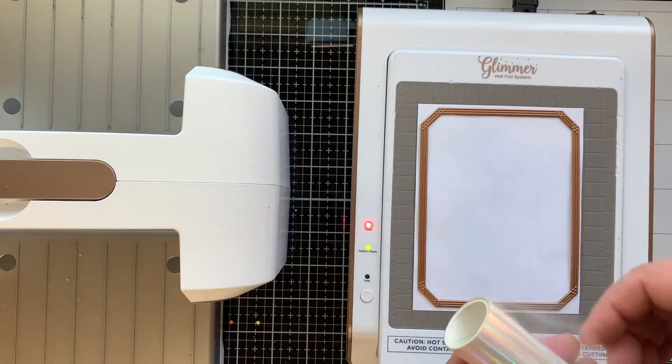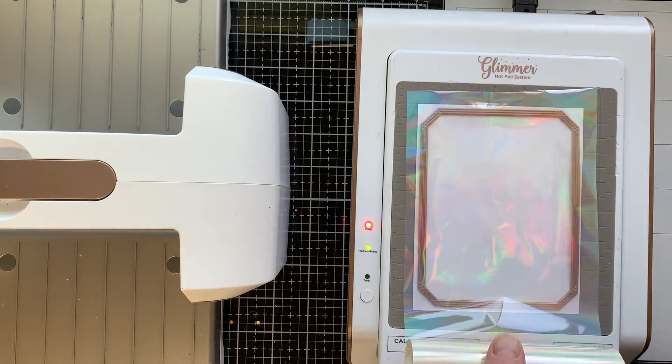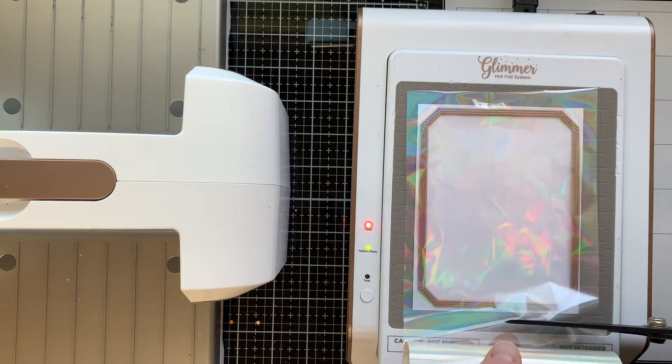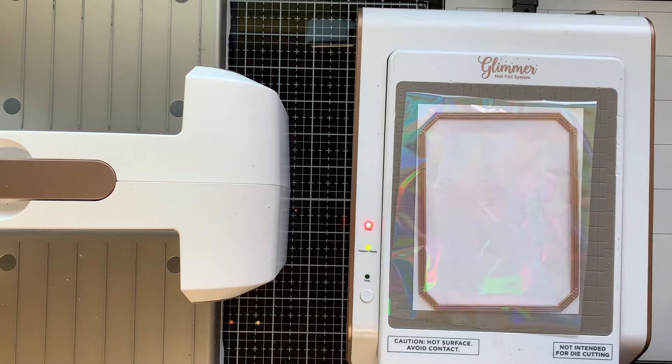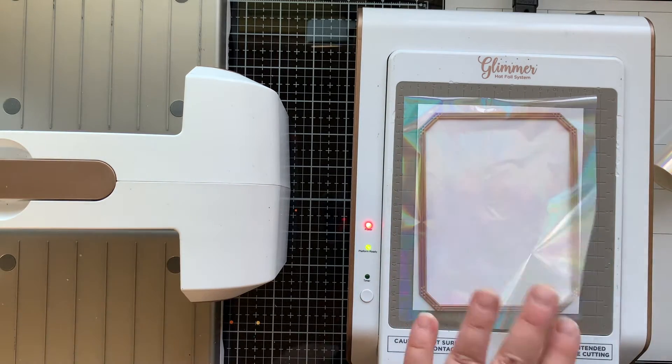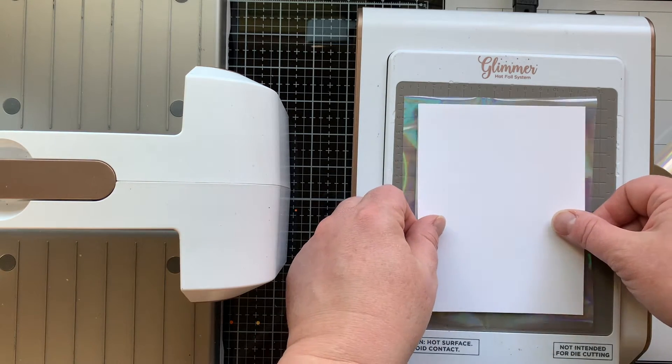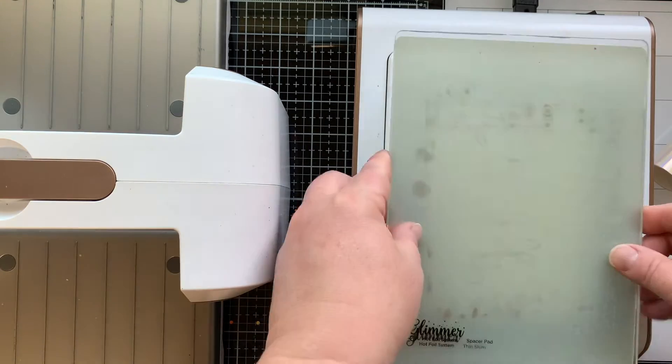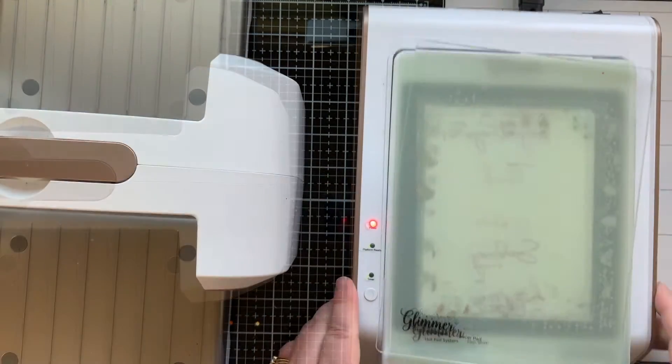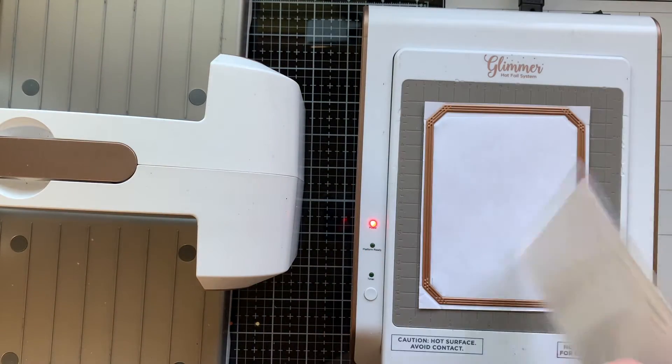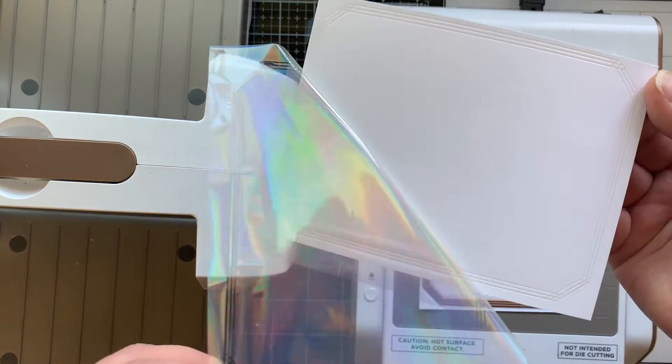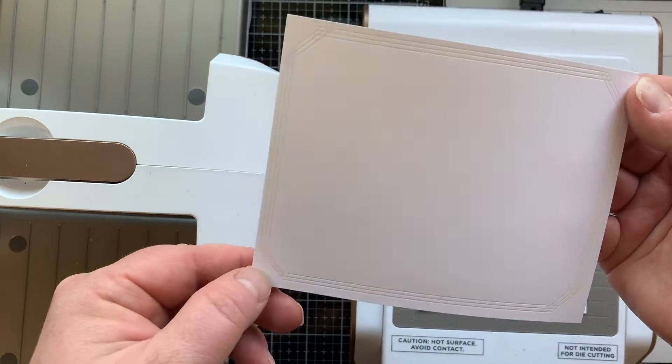So I'm going to do that one more time with the largest die from this set, so I'm going to have two layers that will make up the background of my card. So again, cutting that opal foil off right when I'm ready to use it because I have glimmer hot foiled a glimmer plate accidentally by getting that foil upside down. All right, so here's the largest one. So cool to have that subtle background.